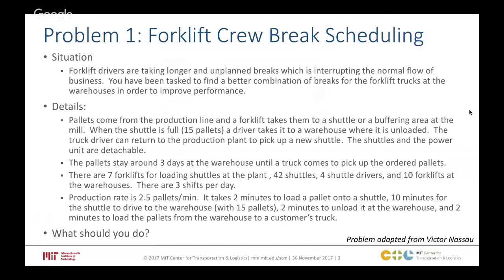It's a pretty standard situation. Pallets come in from a production line and a forklift takes them to the shuttle and a buffering area at the mill. When the shuttle is full with 15 pallets, a driver takes it to a warehouse where it's unloaded. Truck drivers can return back to the production plant to pick up a new shuttle to go back and forth. The shuttles and the power unit are separable — they're detachable. Pallets stay around three days at the warehouse, then a truck comes and takes them to the customers — so it's kind of like a staging area. There are seven forklifts used for loading shuttles at the plant, 42 shuttles going back and forth, four shuttle drivers, 10 forklifts at the warehouse destination, and three shifts per day. The production rate is about two and a half pallets a minute. It takes two minutes to load a pallet, roughly 10 minutes for the shuttle to drive to the warehouse with a full 15 pallets, two minutes to unload, and two minutes to load pallets when the customer's truck comes.